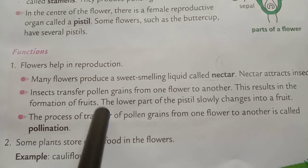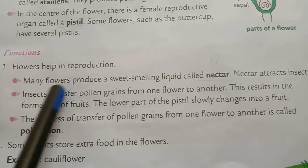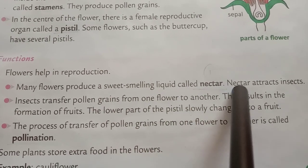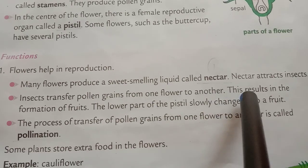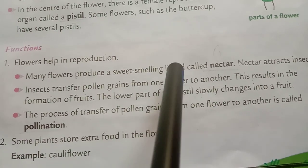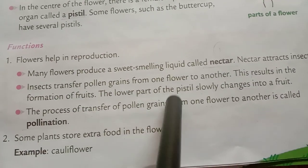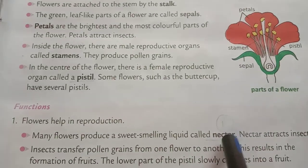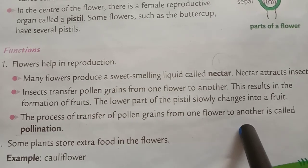What are the functions of flowers? Flowers help in reproduction. Most flowers produce a sweet-smelling liquid called nectar. Nectar attracts insects, and insects transfer pollen grains from one flower to another. This results in the formation of fruits. The lower part of the pistil slowly changes into a fruit. The process of transfer of pollen grains from one flower to another is called pollination.